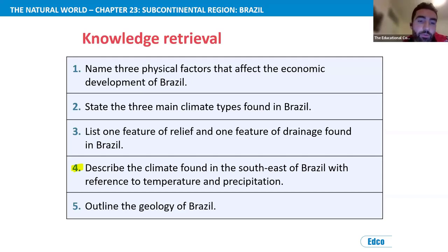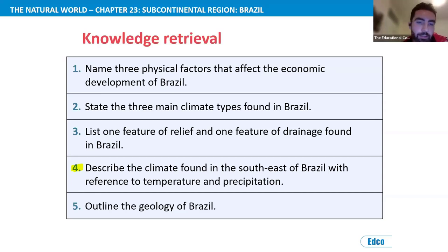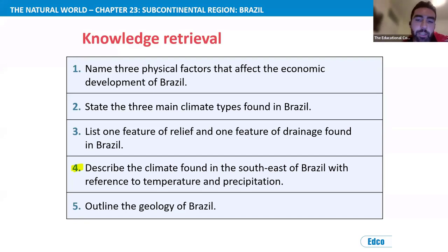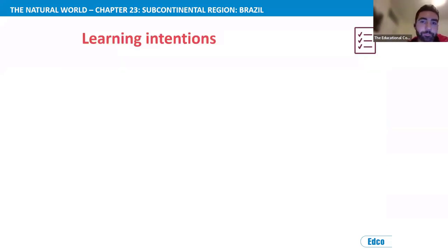While students complete retrieval practice I circulate intensely — not sitting at my desk — providing support and extension activities. For example, for a student with additional educational needs, I might write success criteria directly in their copy book for a question like 'describe the climate found in the southeast of Brazil.' For higher-achieving students I'll add an extension question, such as asking them to describe the climate of the northeast of Brazil, pushing them to discuss the semi-arid climate found there.